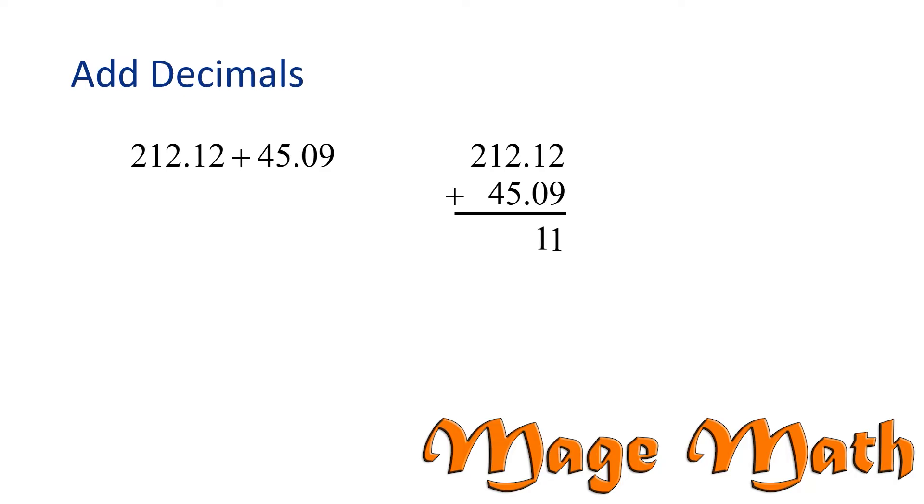But we only write one digit below, so we're going to carry the 1. Now we add in the tenths column. 1 plus 1 plus 0 is 2. Next, place the decimal point, and then add in the next column.